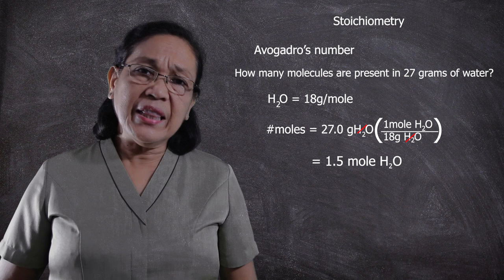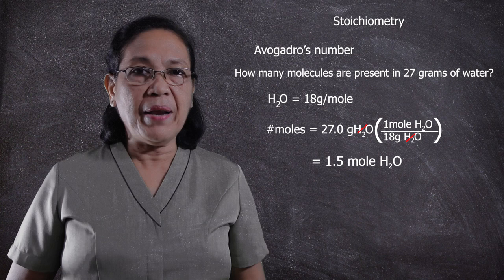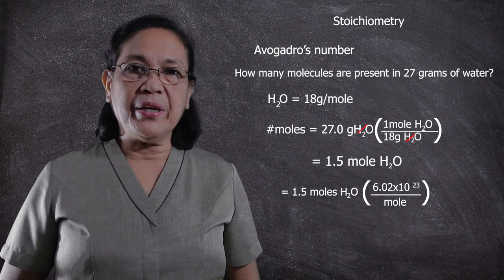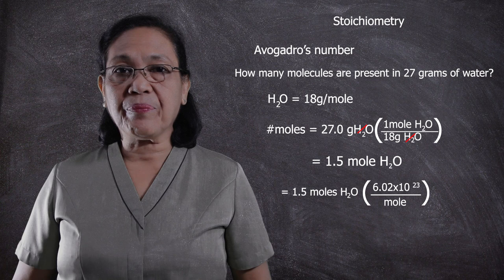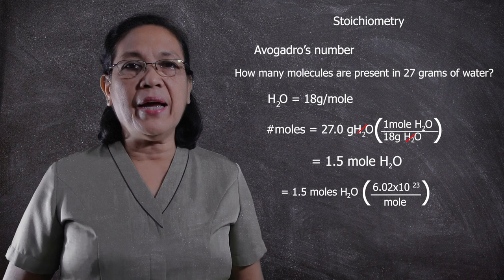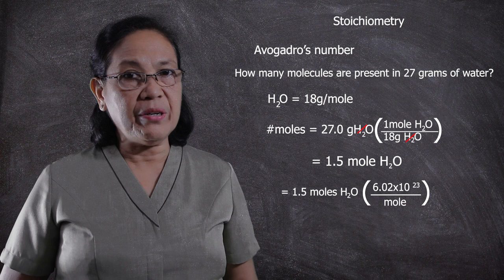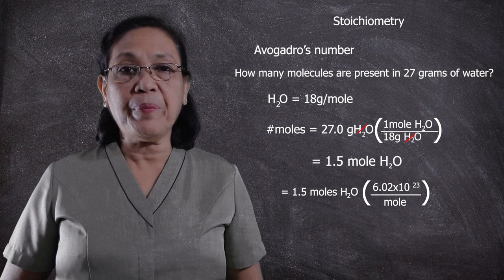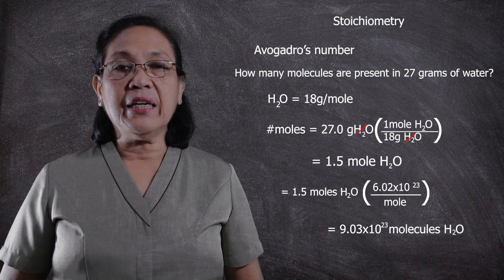With this number of moles of water, which is 1.5, we are going to multiply this by Avogadro's number, which is 6.02 times 10 to the 23 molecules per mole. We can cancel out the unit mole, so the prevailing unit is now the number of molecules of water. Multiplying 1.5 moles of water times 6.02 times 10 to the 23 molecules of water per mole of water equals 9.03 times 10 to the 23 molecules of water.